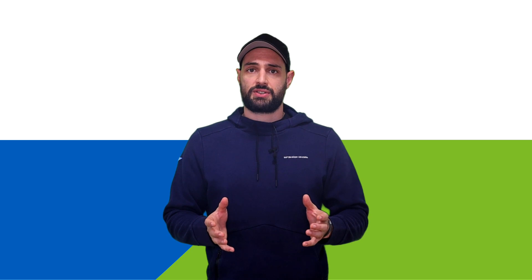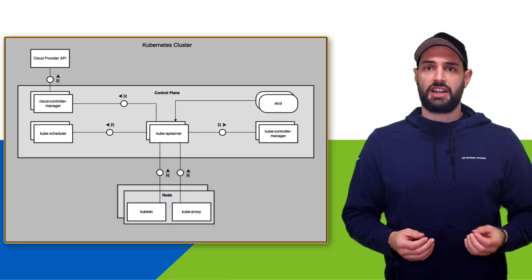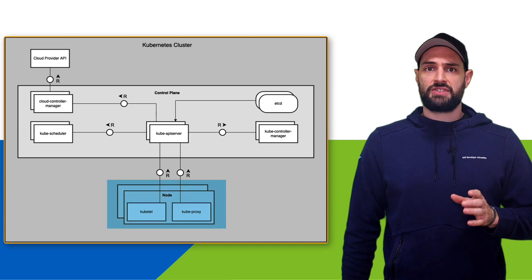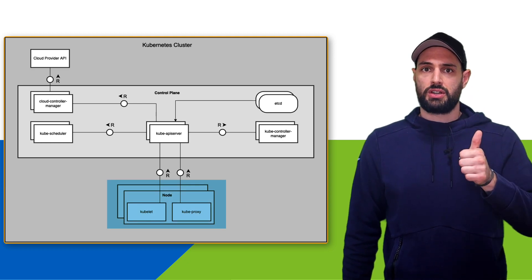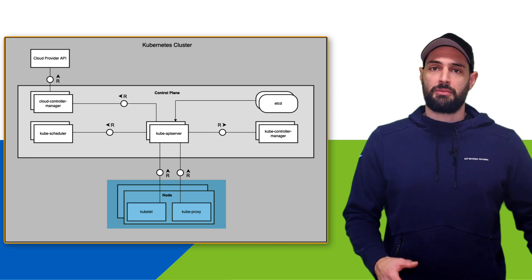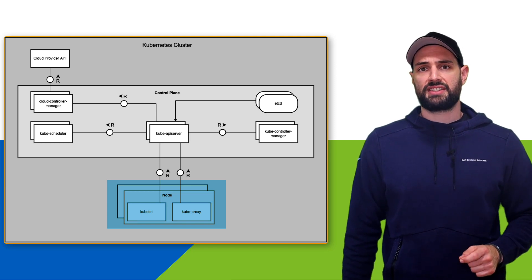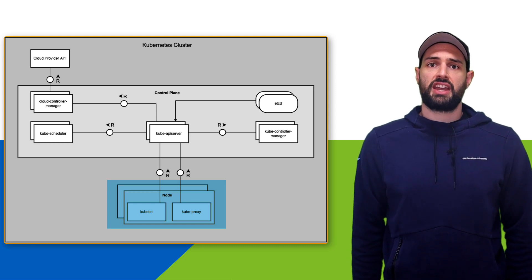Next, let's talk about the Kubernetes architecture. To help you better understand how it works, I'll give you an overview of the single components within a Kubernetes cluster. When working with Kubernetes, you get a cluster consisting of a set of worker machines called nodes. Every Kubernetes cluster comes with at least one node. These nodes function as a runtime for containerized applications and host so-called pods, which are part of the application workload. A pod represents a single instance of a running process within your cluster and contains your containerized applications.